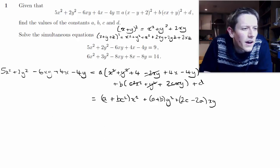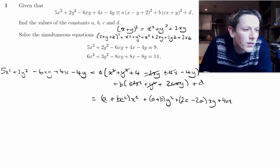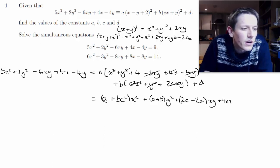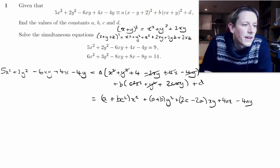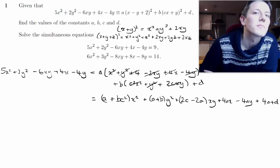Then for the x terms I have +4ax, and for the y terms just −4ay. And for the constant terms I've got 4a plus d.